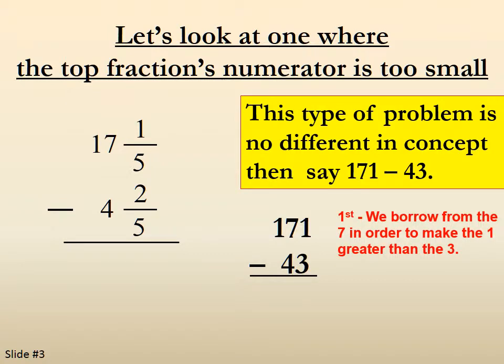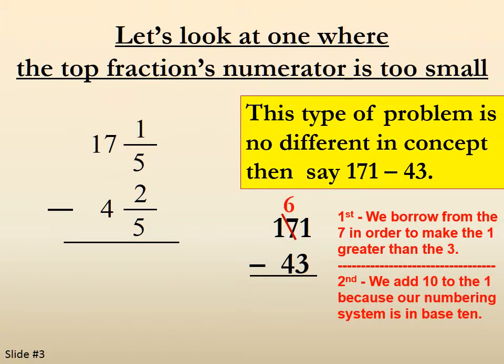First we have to borrow from the 7 in order to make the 1 greater than the 3. So the 7 becomes a 6. And then we add 10 to the 1, making it 11. We do this because our numbering system is base 10. That's why we don't add 5 or 6. That's why we add 10.